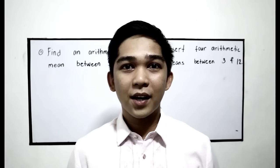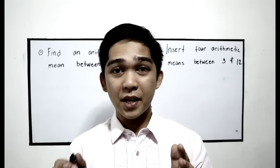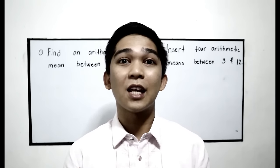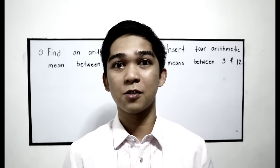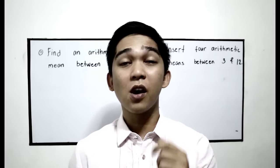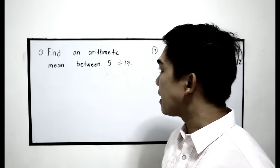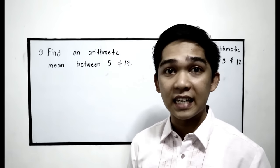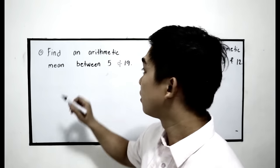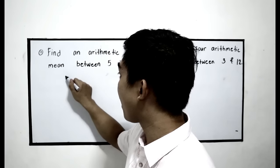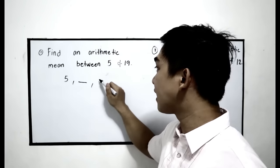Now let us proceed to arithmetic means. Arithmetic means are found between the two extremes in our arithmetic sequence. Let's try to solve example number 1: find an arithmetic mean between 5 and 19. First, let us illustrate. A1 will be 5, we're going to find the mean, then 19.